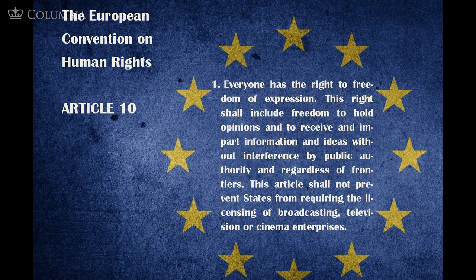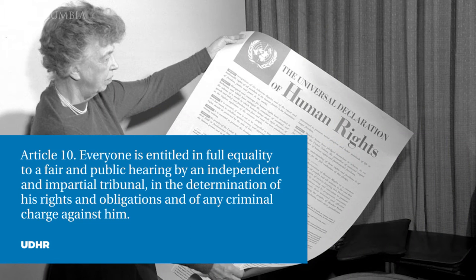Let's look at how this Convention protects freedom of expression. The protection of freedom of expression is done through Article 10, which states in Paragraph 1: everyone has the right to freedom of expression. This right shall include freedom to hold opinion and to receive and impart information and ideas without interference by public authority and regardless of frontiers. This article shall not prevent states from requiring the licensing of broadcasting, television, or cinema. If you recall Article 19 of the UDHR, Paragraph 1 of Article 10 of the European Convention is very similar. The last sentence — the fact that states can license broadcasting and cinema — completely lost its significance fairly quickly and is nowadays rarely, if ever, mentioned.